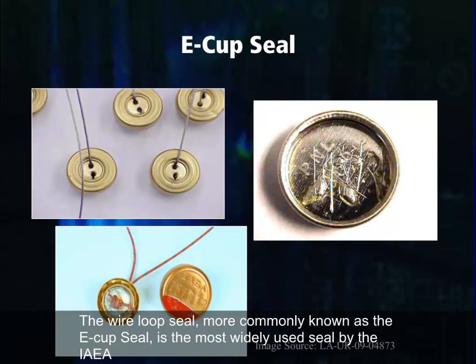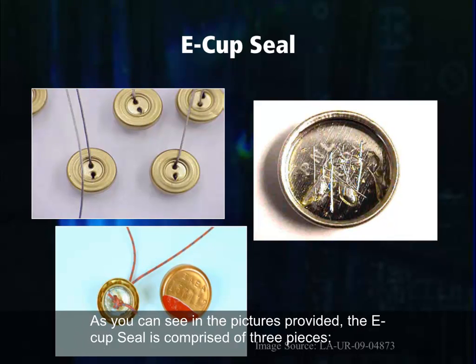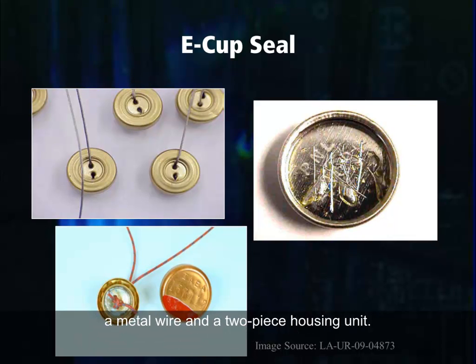The wire loop seal, more commonly known as the ECUP seal, is the most widely used seal by the IAEA. As you can see in the pictures provided, the ECUP seal is comprised of three pieces: a metal wire and a two-piece housing unit.